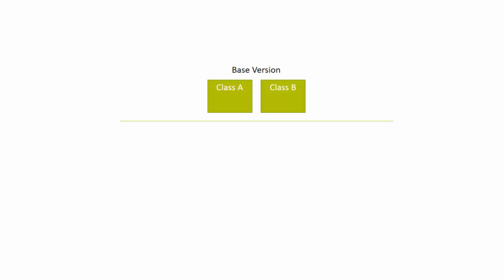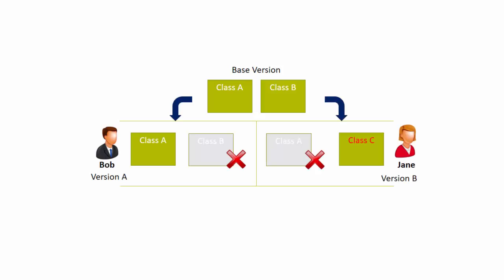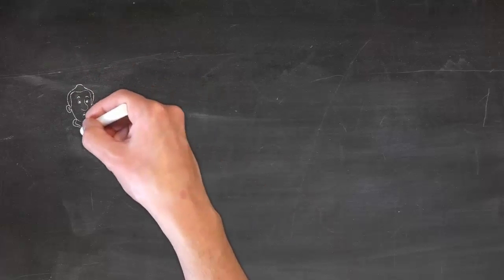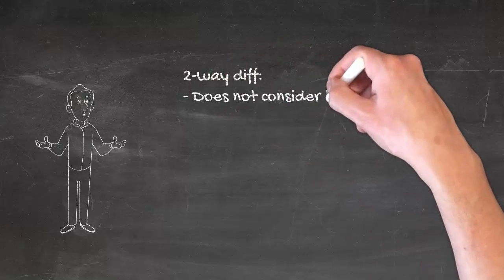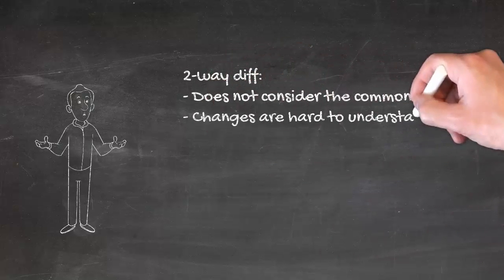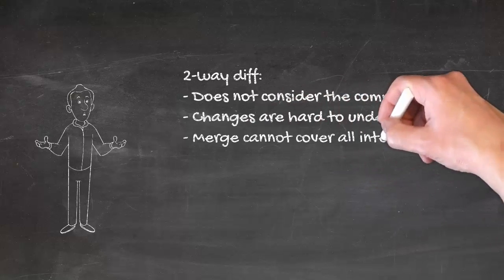This all starts with the base version having two classes A and B defined. Bob has decided to delete class B, whereas Jane a bit later decided to delete class A and change the name of class B to class C. What will happen after those changes are merged? The final version will include only Jane's class as the change was the last change to the model. Two-way diff cannot identify detections since the common base is unknown. Therefore, changes are hard to understand and merge cannot cover all intentions.